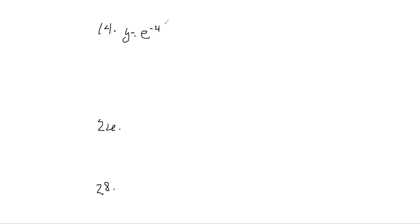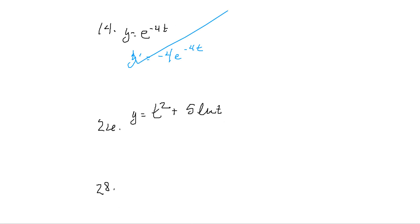Let's do problems 14, 26, and 28. Problem 14: y = e^(−4t). Problem 26: y = t^2 + 5·ln(t). For problem 14, the answer already came in the chat: y' = −4e^(−4t). Perfect — easy, moving on. For problem 26: y = t^2 + 5·ln(t), written out for clarity.